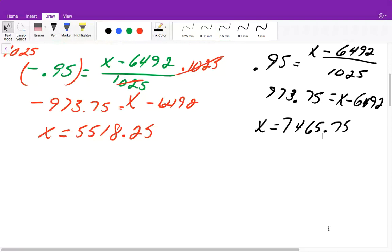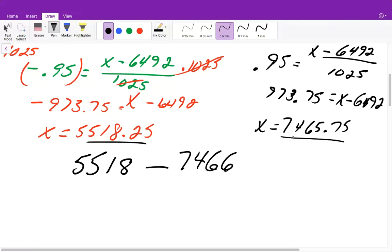So that means the range of money, or the range of boats that will be sold, that will be in the middle 66%, will be between $5,518 to $7,466. Now, if you leave it in decimals, that would be perfectly fine, or if you round it, I would accept either as your answer. So this is the range.